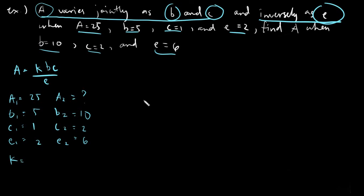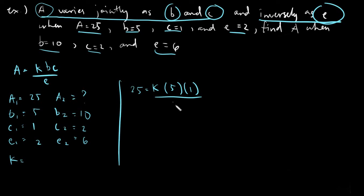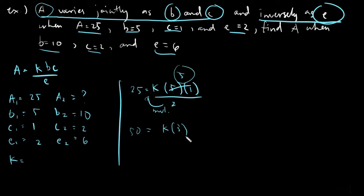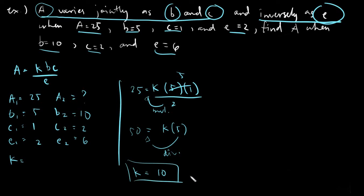Solving for k requires set 1: 25 is equals to k times 5 times 1 all over 2. This simplifies to 5 over 2. Transposing the 2 gives us 2 times 25 equals 50, which equals k times 5. Transposing 5 gives us k equals 50 divided by 5, so k is equals to 10.